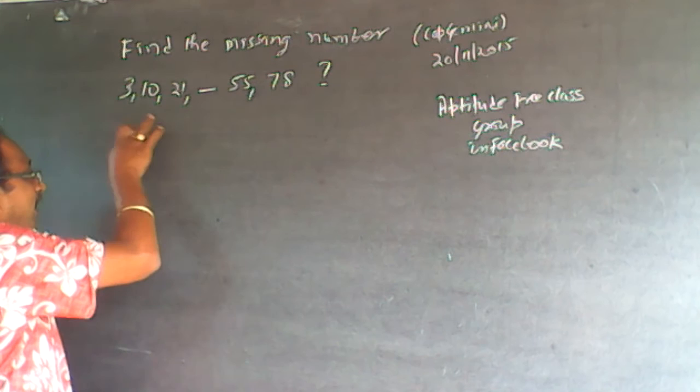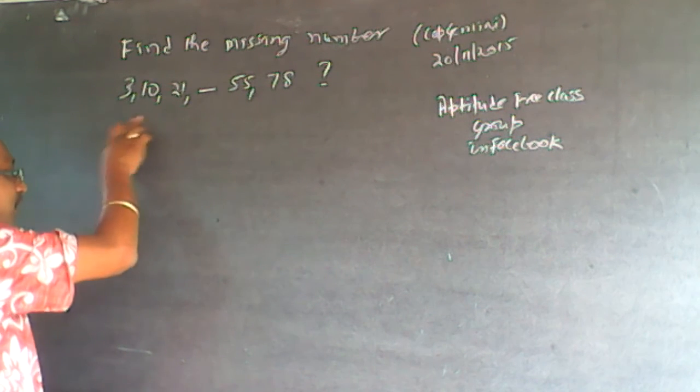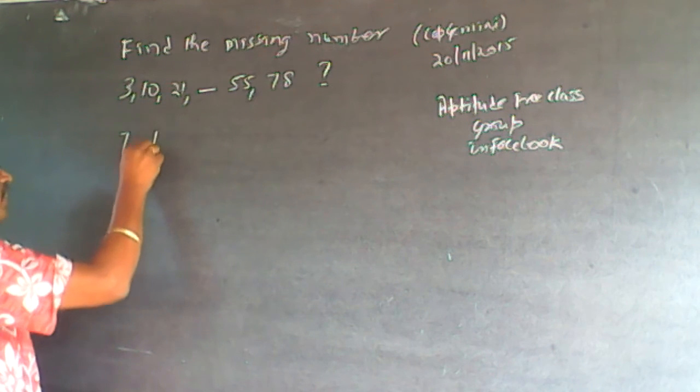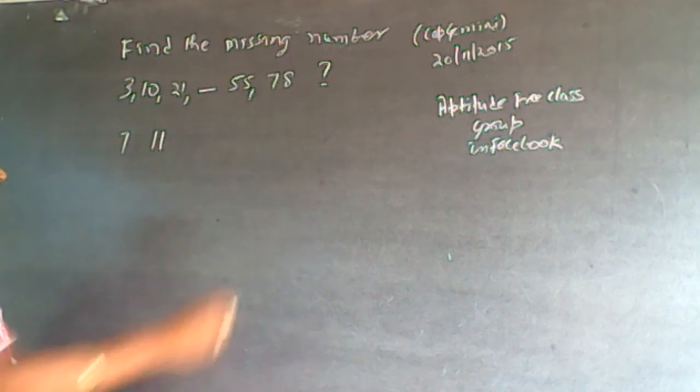So this is 3, 10, 21, ?, 55, 78. You have to find this number here. When you see the difference here, it is 7. When you see the difference here, it is 11. And when you see the difference here, it is 23.